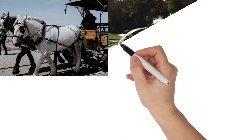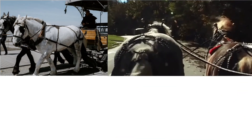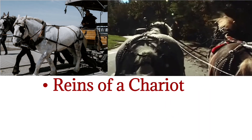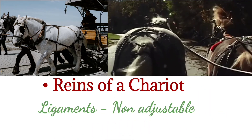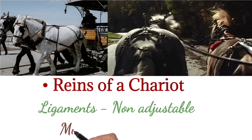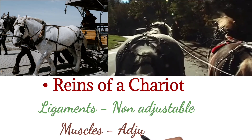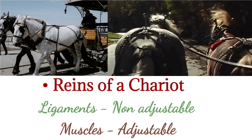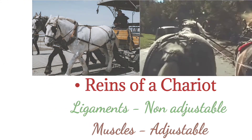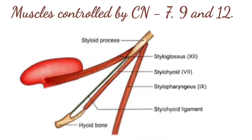It is a general consideration that the five attachments resemble the reins of a chariot. Two of these reins — the ligaments — are non-adjustable, whereas the other three muscles are adjustable and are controlled each by a separate cranial nerve: the seventh, ninth, and twelfth nerves.